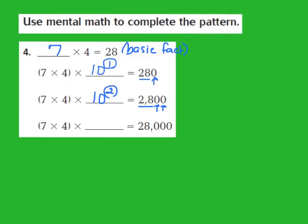Now let's take a look at the last part in this pattern. They give me 7 times 4 times blank equals 28,000. I know that 28 was my basic fact answer, and I see that behind that 28 there are three zeros. So my missing part should be the third power of 10, because my exponent should match my number of zeros in the product. Let's check: my exponent is 3, so I should have three zeros — 1, 2, 3 — and my answer checks out.